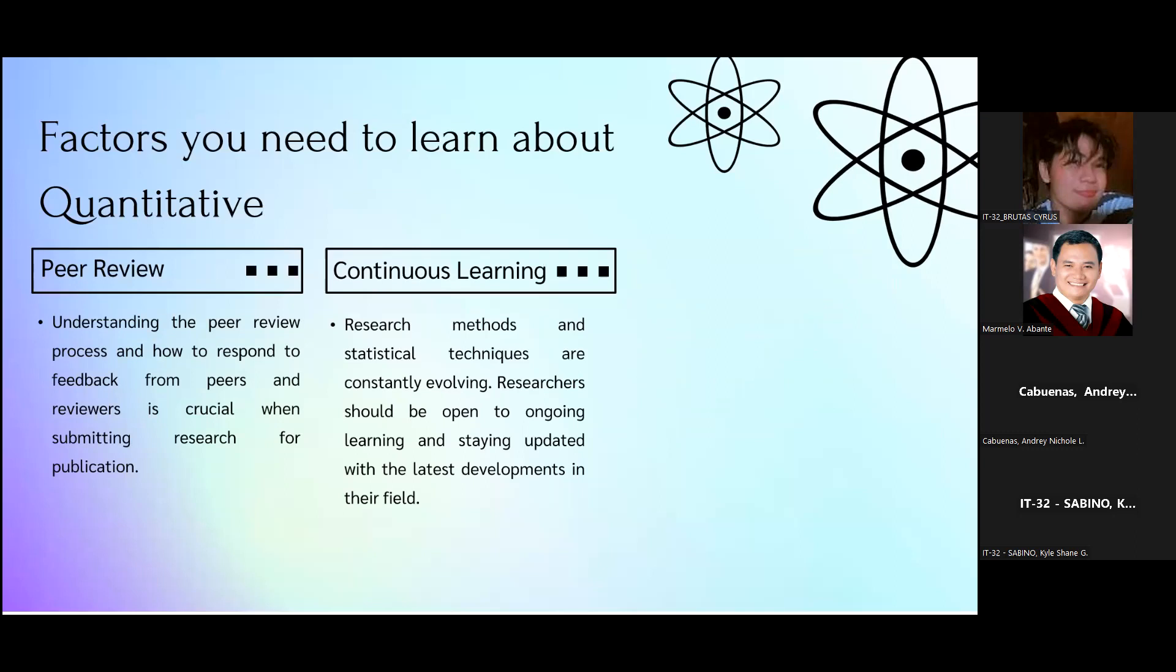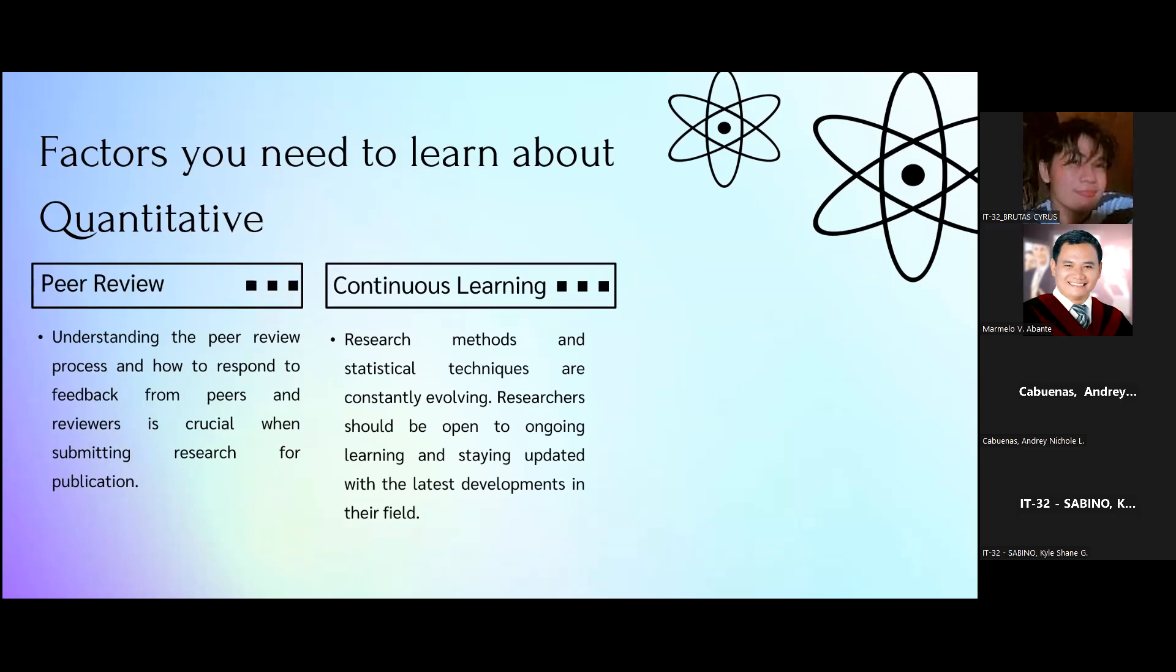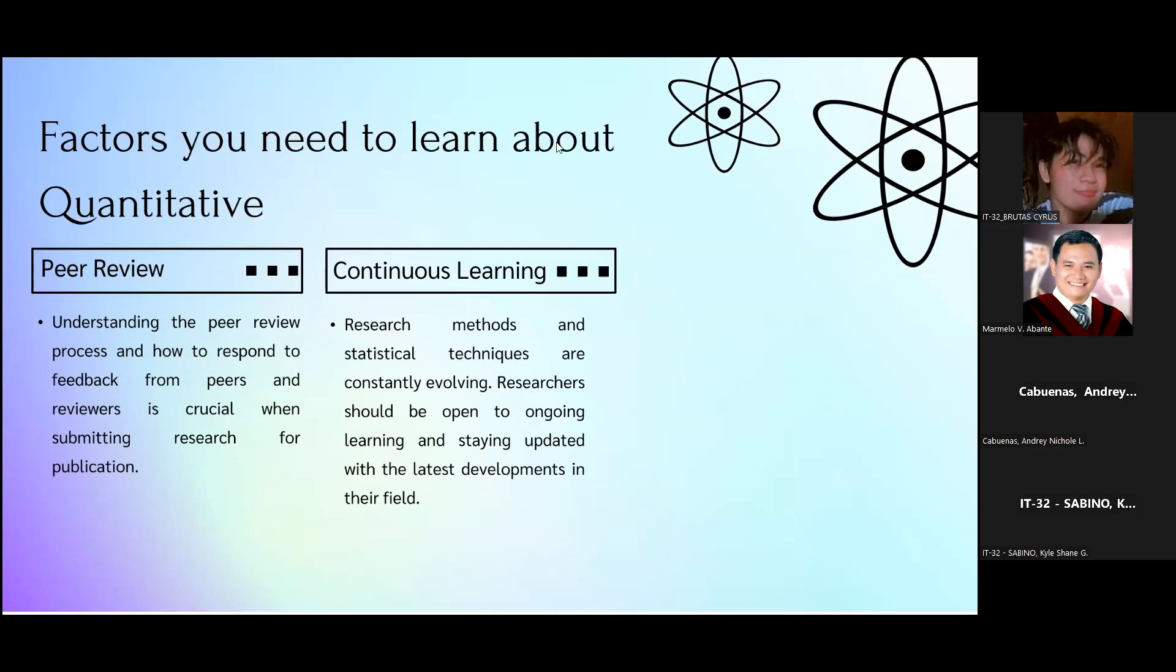Peer review: understanding the peer review process and how to respond to feedback from peers and reviewers is crucial when submitting research for publication. And continuous learning: research methods and statistical techniques are constantly evolving. Researchers should be open to ongoing learning and staying updated with the latest developments in their field.